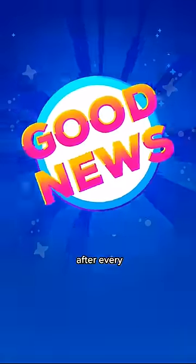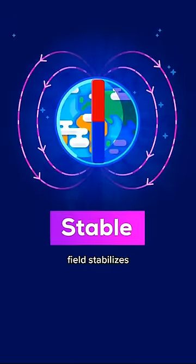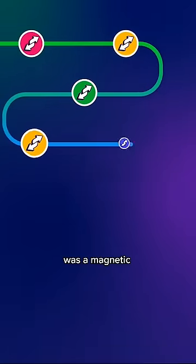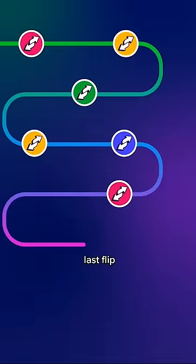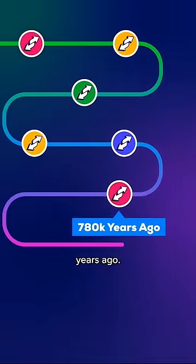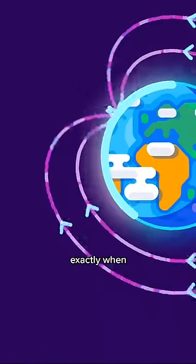The good news, after every flip, the magnetic field stabilizes again. In the past, there was a magnetic pole flip about every 300,000 years, and the last flip occurred 780,000 years ago. Although we don't know exactly when it will happen...